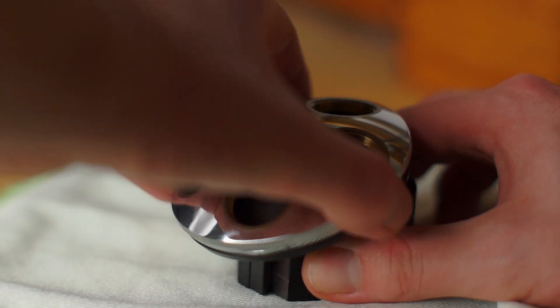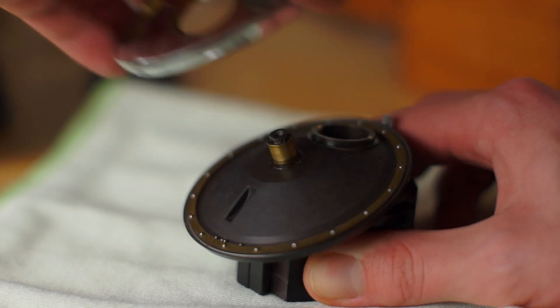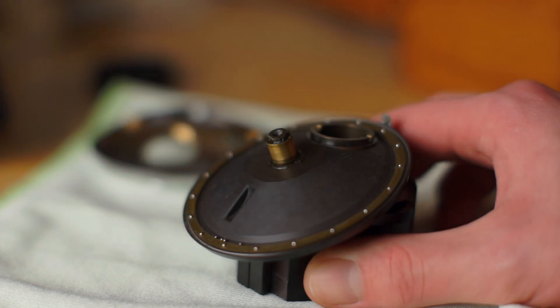After having removed the upper bearing, we can now remove the rotating element from the turret. This gives us access to the lower bearing.